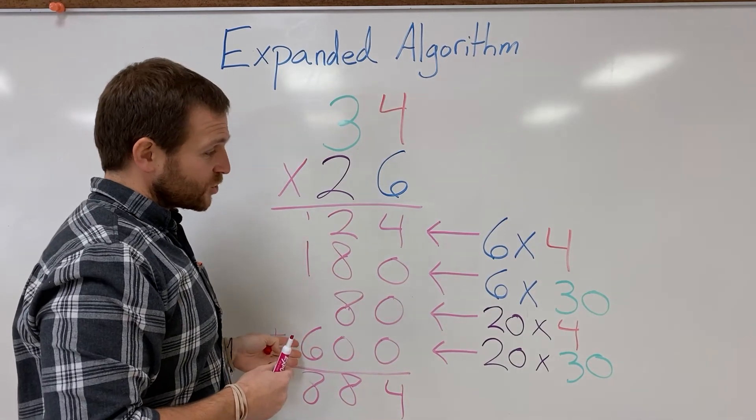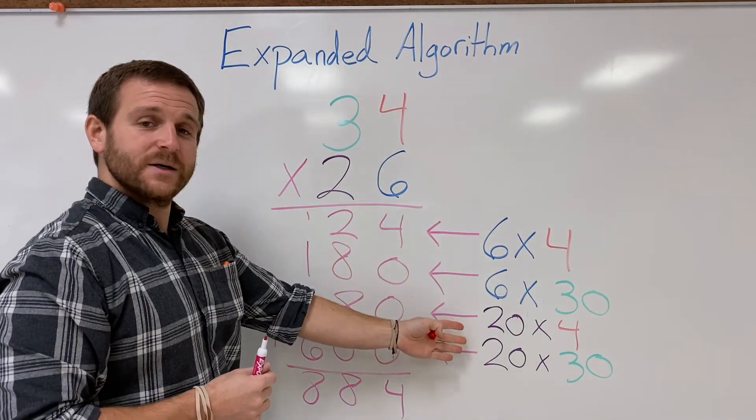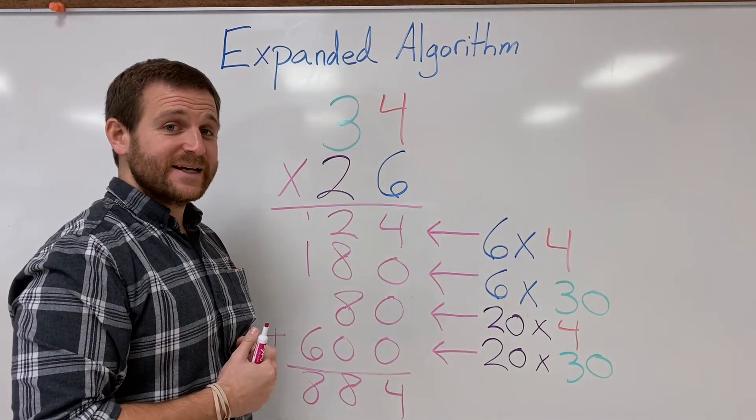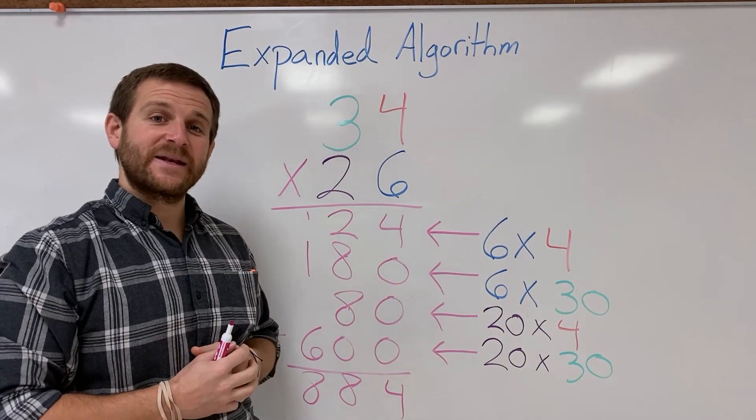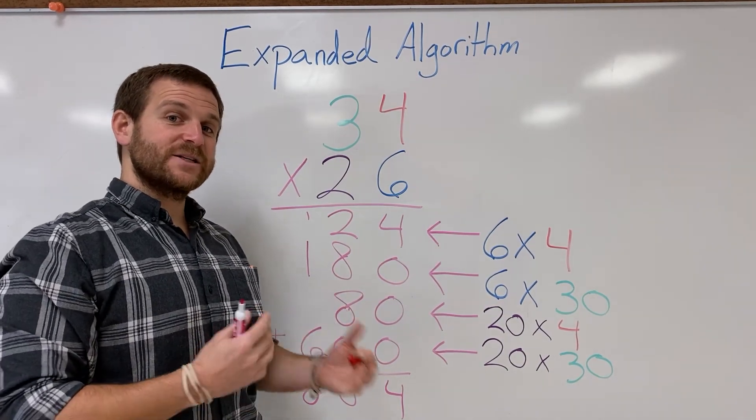As you can see, I have 4 partial products. Here's my 4 individual math problems that I did. And this is the expanded algorithm for double digit times double digit multiplication.